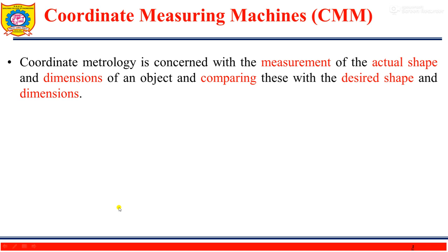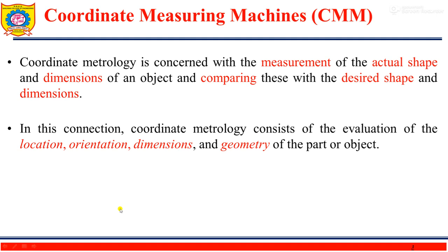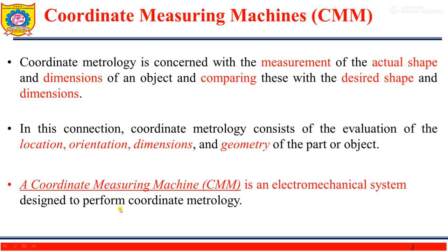Here we are going to make use of coordinate metrology. Coordinate metrology consists of the evaluation of the location, orientation, dimensions, and geometry of the part or object. We make use of the coordinate system for measurement of different features of components — their location, orientation, dimension, and geometry — of the parts or objects for which we wish to measure the parameters.